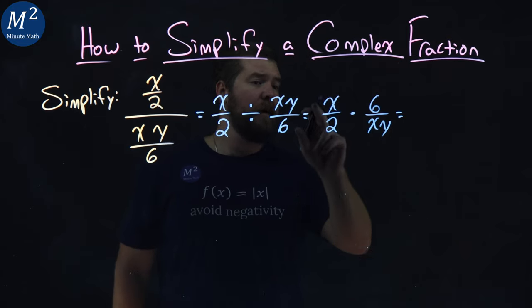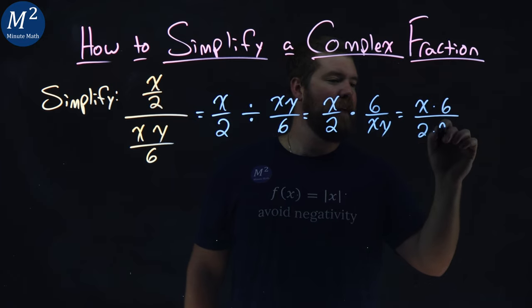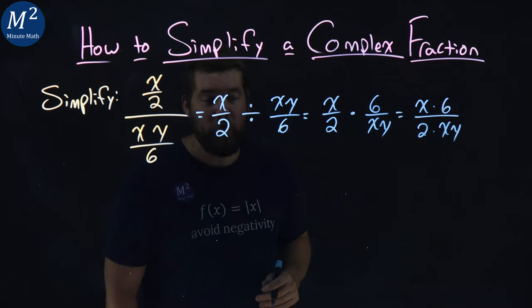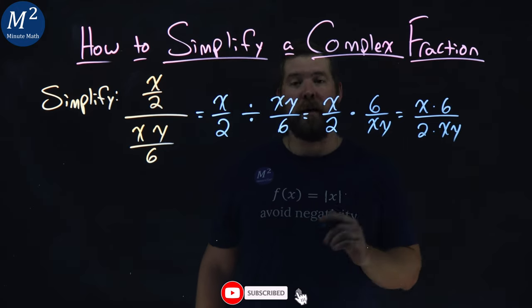Let's multiply this out. x times 6 is an x times a 6 over 2 times an xy. Remember, multiplying fractions, you multiply across the numerator and across the denominator.